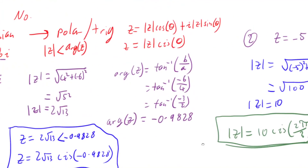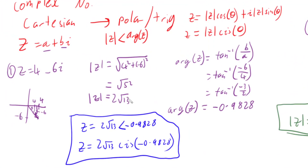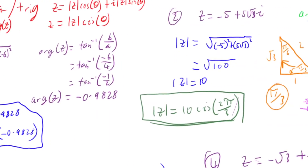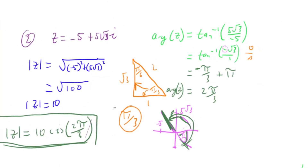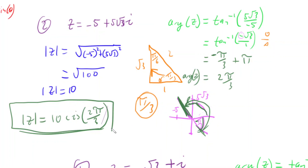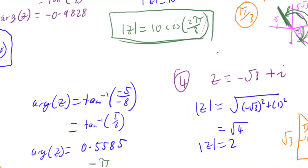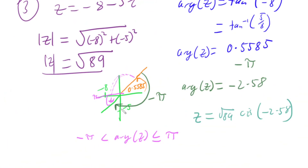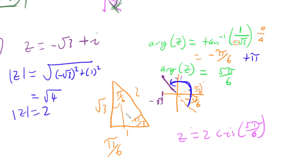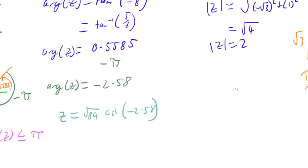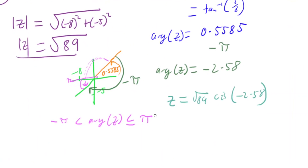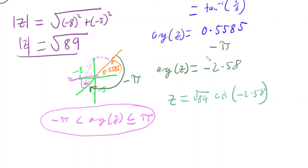To summarise: if we're converting a complex number from Cartesian form a plus bi into polar or trig form, we use Pythagoras to get the magnitude, and inverse tan of imaginary over real to get the argument. But we have to be careful — tan doesn't always give us the angle we need, especially in quadrant 2 or 3. We get the correct angle by adding or subtracting pi, remembering that the argument must be between negative pi and pi.